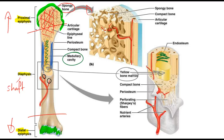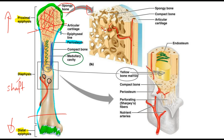The last thing we look at is the periosteum. The periosteum is the thin covering around the outside of the bone — here it's the sheath that we can see wrapped around the bone.